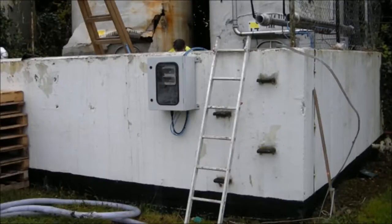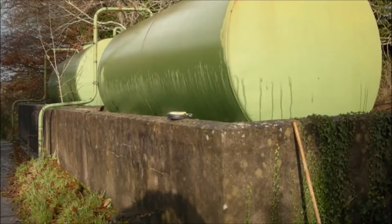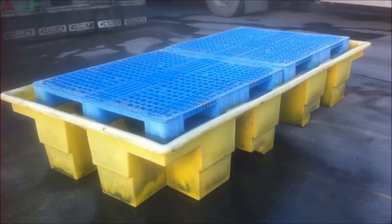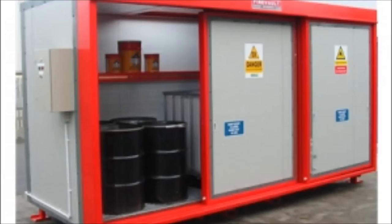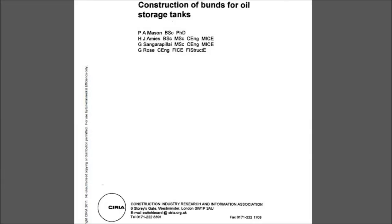The usual material for bund construction is reinforced mass concrete, or sometimes reinforced masonry. Bunds constructed of unreinforced hollow core concrete blocks or breeze blocks are totally unsuitable and have a very high failure rate when tested. An alternative is the sump pallet, manufactured from either plastic or steel, or a bunded storage cabinet, sometimes referred to as a chem store unit.